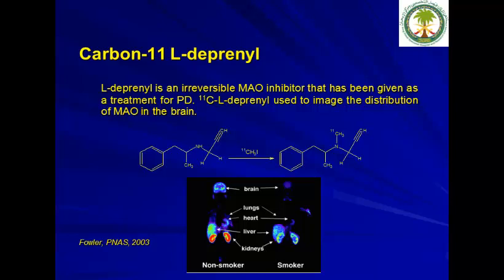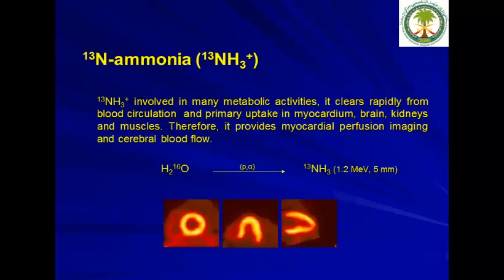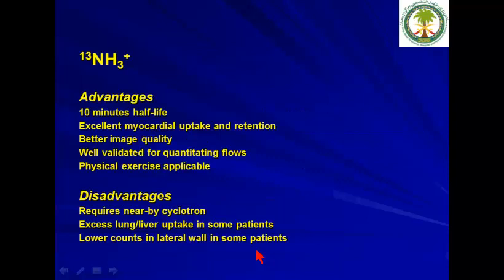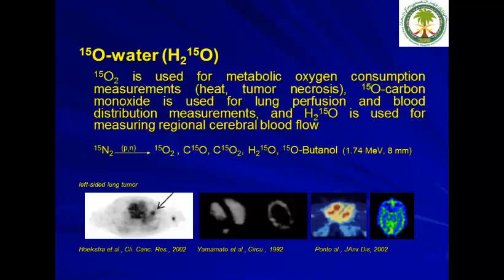Ammonia (N-13) is heavily used for myocardial imaging. Production is straightforward — natural water is used to produce the ammonia — giving very good images. Advantages include a 10-minute half-life, excellent myocardial uptake and retention, better image quality, and well-validated use for quantitative flow and physical exercise applications. The major disadvantage is that it requires a nearby cyclotron.